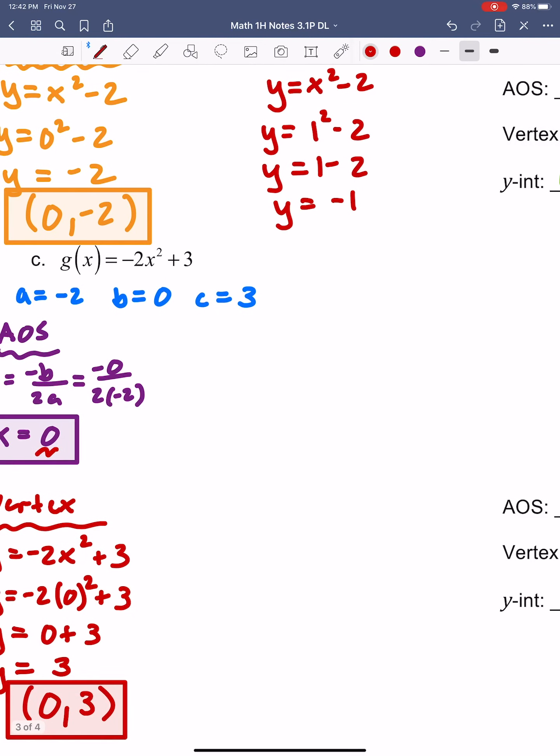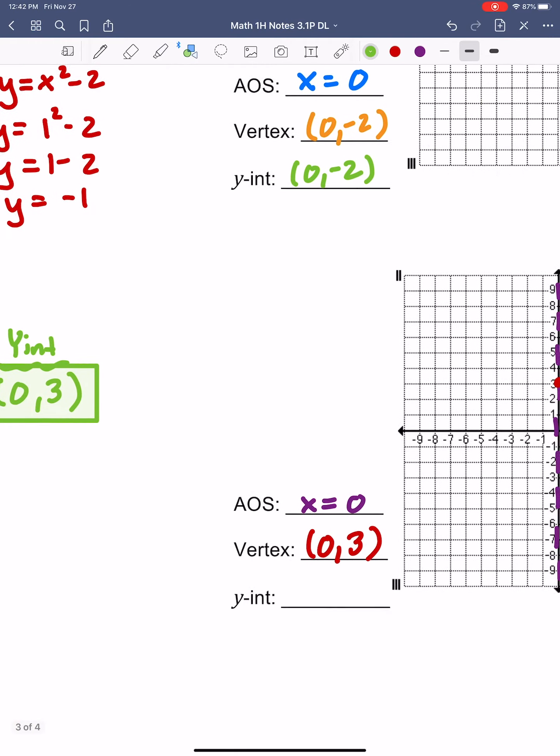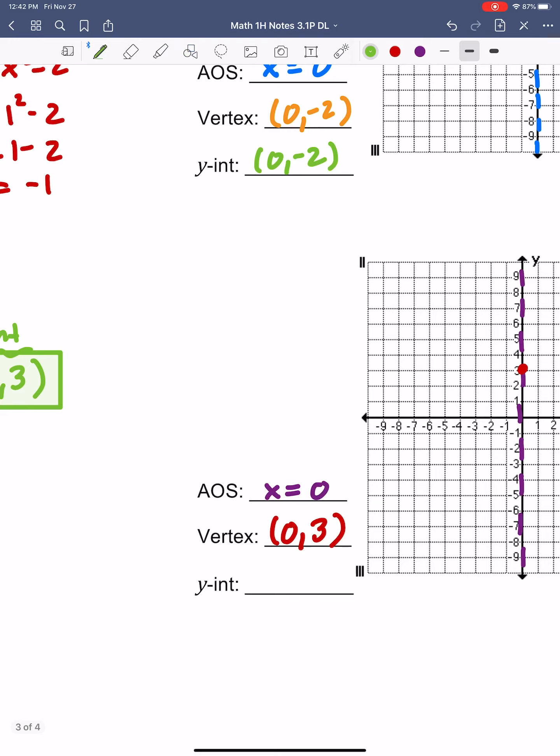Okay, we can find the y-intercept super quick and easy. Remember, the y-intercept is always just the c value. So in this case, it's going to be (0, 3). But we already knew that because if there's no b value, then the y-intercept and the vertex are the same.